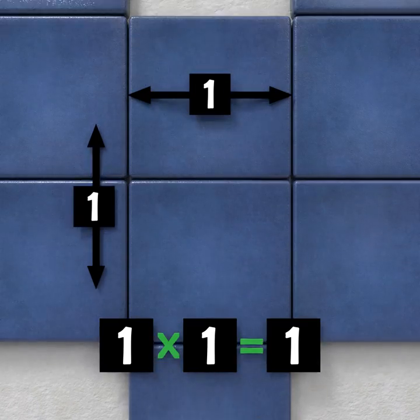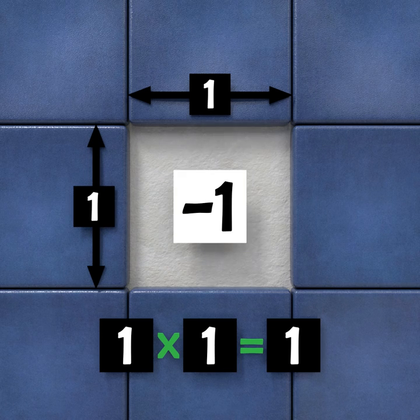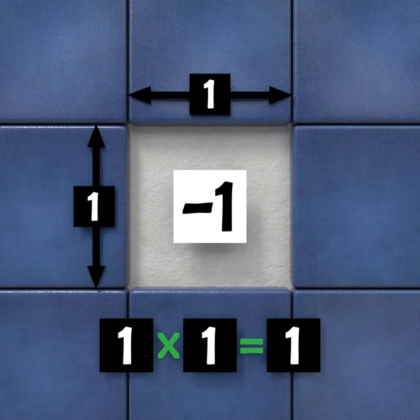But how would we calculate the area of the square hole? Since it's a hole, we know it has a negative area. The distance along the edge of the hole is 1 unit. But if we said the area is 1 times 1, we'd get the incorrect area of positive 1.